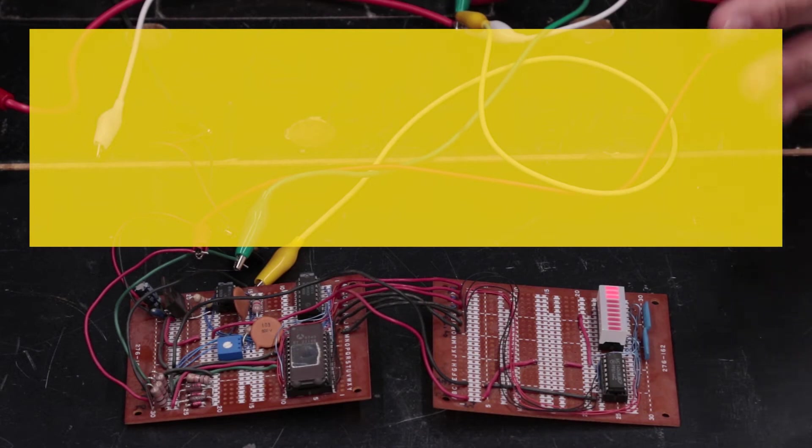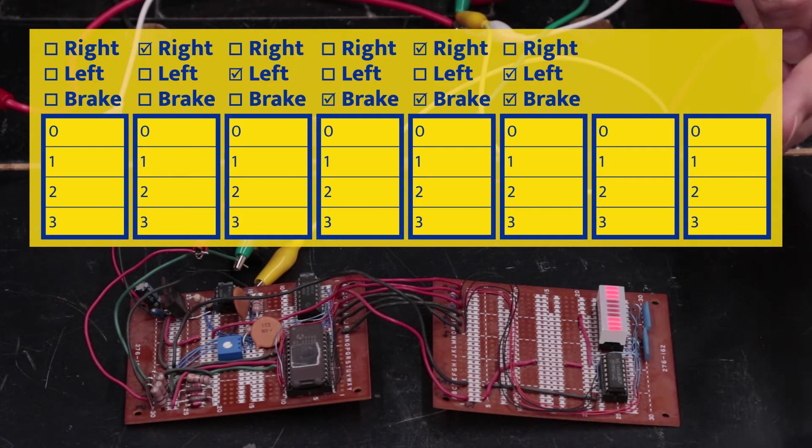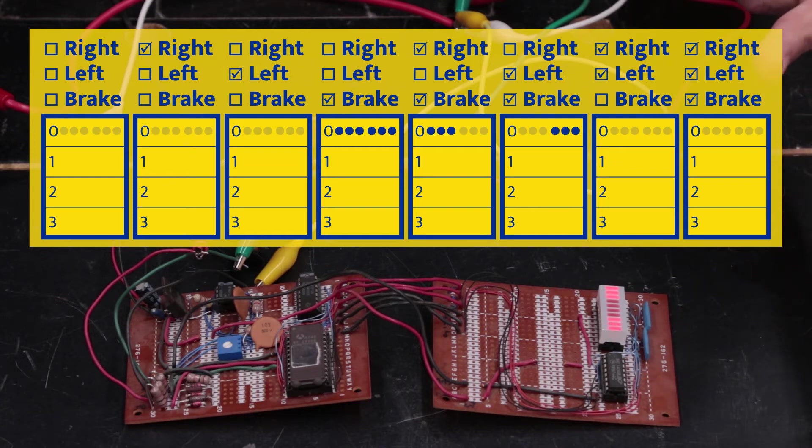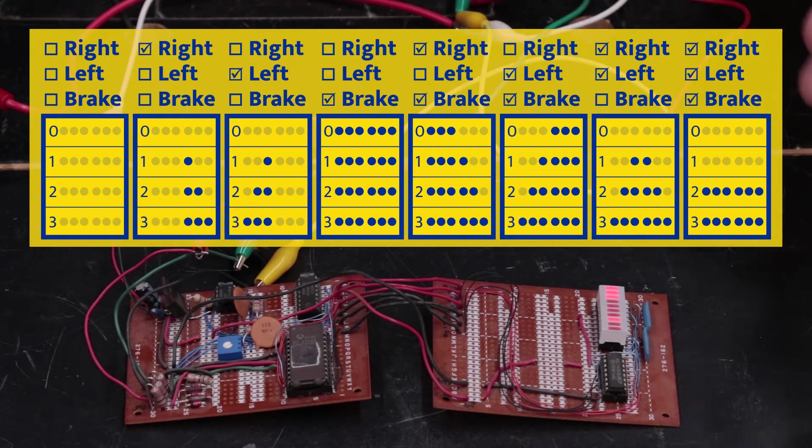The way I have this EEPROM set up is there are multiple blocks of four groups. The four groups correspond to the off state, the one LED state, the two LED state and the three LED state. And those four states are just replicated for each of the combinations of right turn, left turn, and brake that are possible.